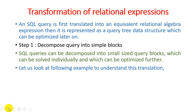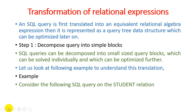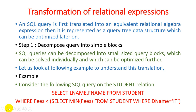Let us look at the following example to understand this translation. Consider the SQL query on the student relation: SELECT l_name, f_name FROM student WHERE fees < (SELECT MIN(fees) FROM student WHERE d_name = 'IT'). In this example there are two different selection operations. We perform two different queries — first the inner query is executed: SELECT MIN(fees) FROM student WHERE d_name = 'IT'. Whatever data comes from this inner block is then taken as input for the outer query.